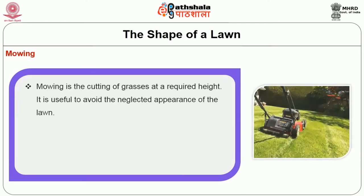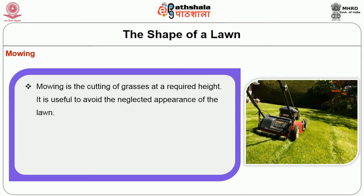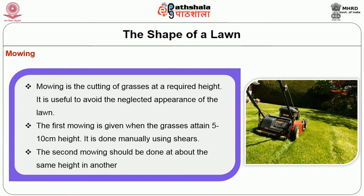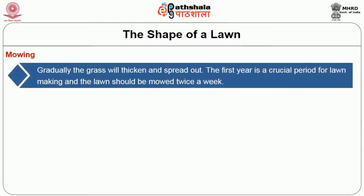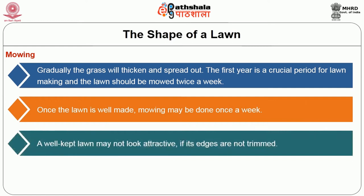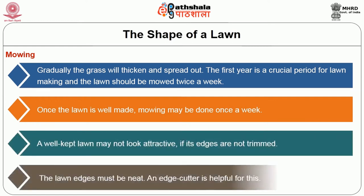Then next is mowing. Mowing is the cutting of grasses at the required height. It is useful to avoid the neglected appearance of the lawn. The first mowing is given when grasses attain 5 to 10 cm height. It is done manually using shears. The second mowing should be done at about the same height in another 3 to 4 days. Gradually, the grasses will thicken and spread out. The first year is the crucial period for lawn making and the lawn should be mowed twice a week. Once the lawn is well made, mowing may be done once in a week. A well-kept lawn may not look attractive if edges are not trimmed. The lawn edges must be neat and an edge cutter is helpful for this treatment.